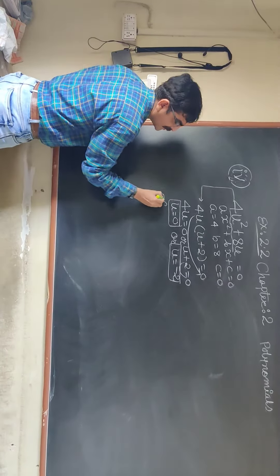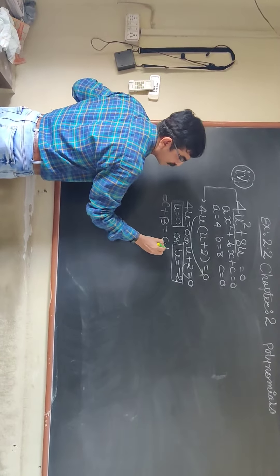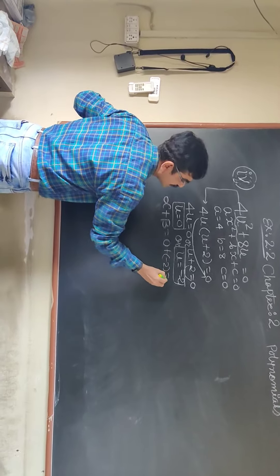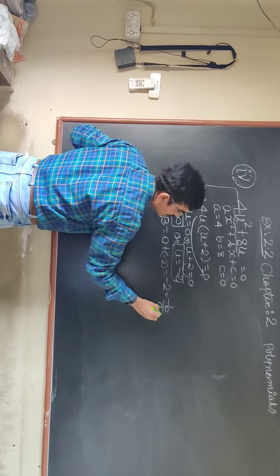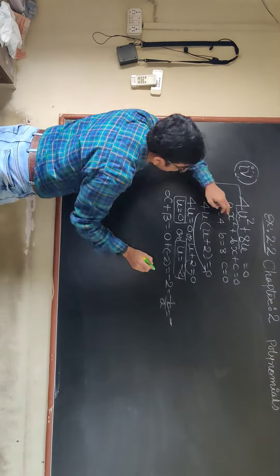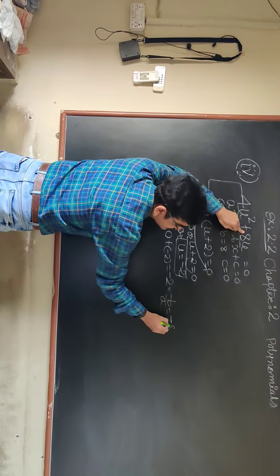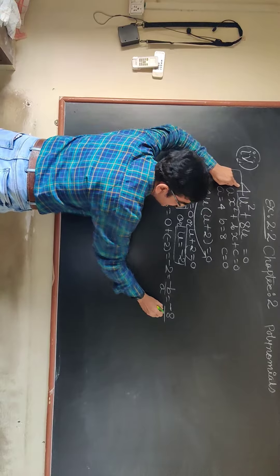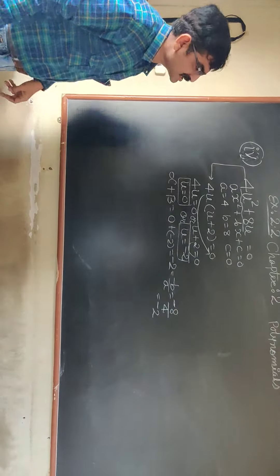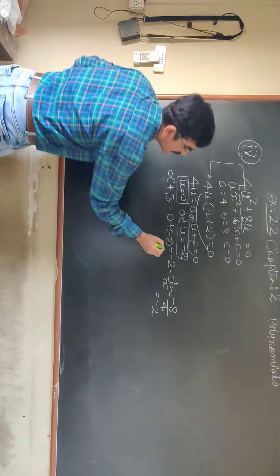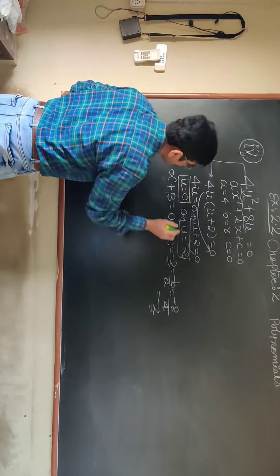Now, alpha plus beta. 0 plus minus 2, that is minus 2. And minus b upon a, what is your minus b? b is 8. And what is a? That is 4. So you are having minus 2. You can see, minus 8 by 4, that is minus 2. That is how we have verified the sum of the root.